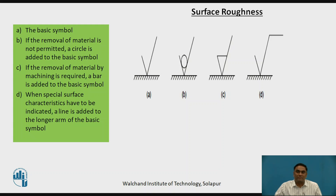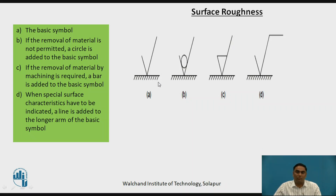Surface roughness and surface finish are mostly the same. There are four symbols included. We are going to discuss the meaning of all four symbols, how they are indicated, and what the meaning of each symbol is. It is in a simple triangular form, and these serrated lines represent a feature to be given with a surface finish symbol.